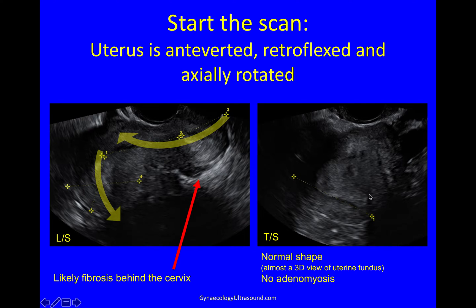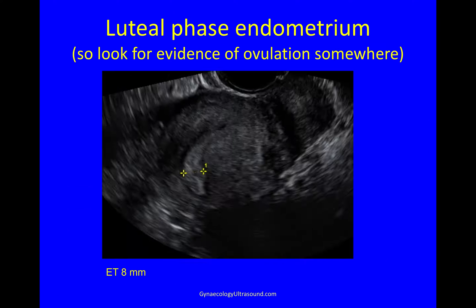You can see there isn't really any evidence of adenomyosis. The endometrial cavity — when a uterus is axial like this — you can get an almost 3D view. This is the endometrial fundus, so you can see this uterus is a normal shape and you don't need 3D here. Looking at the endometrium, you can see this is early luteal phase — it's very white at the edges and hasn't completely luteinized throughout yet, so it reminds you to look for evidence of ovulation somewhere.